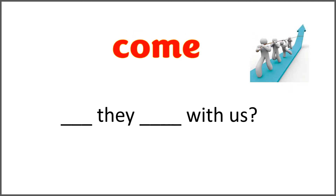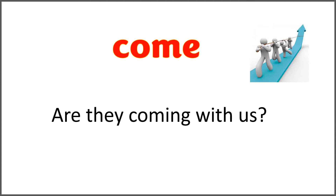The given word is 'come,' and the sentence is 'blank they blank, with us.' Use 'are' with the correct form of 'come' to complete the sentence. And the answer is: are they coming with us? We added -ing with 'come' and it's a question.